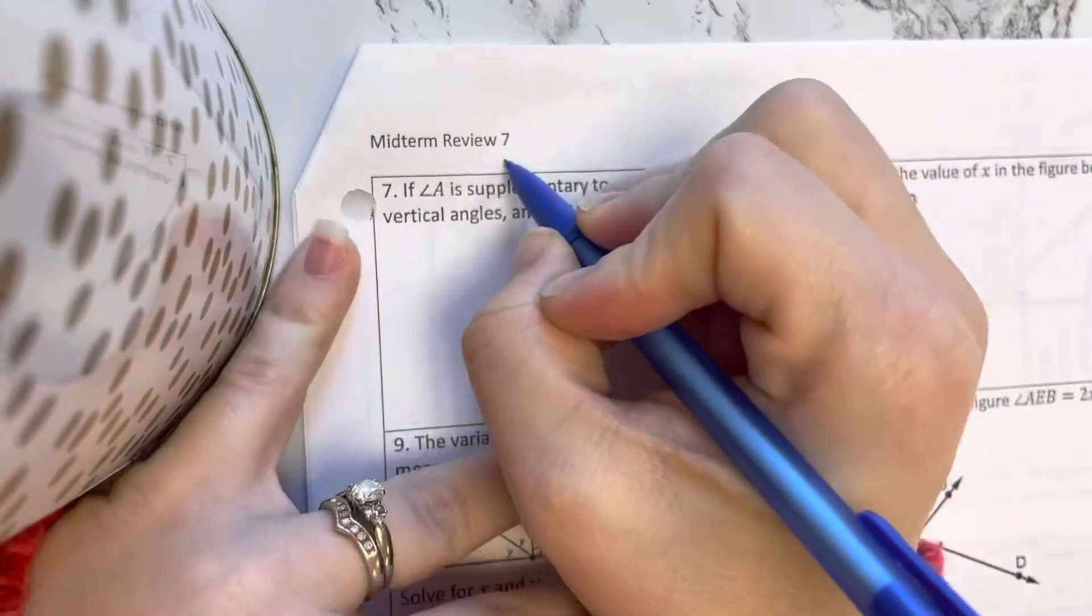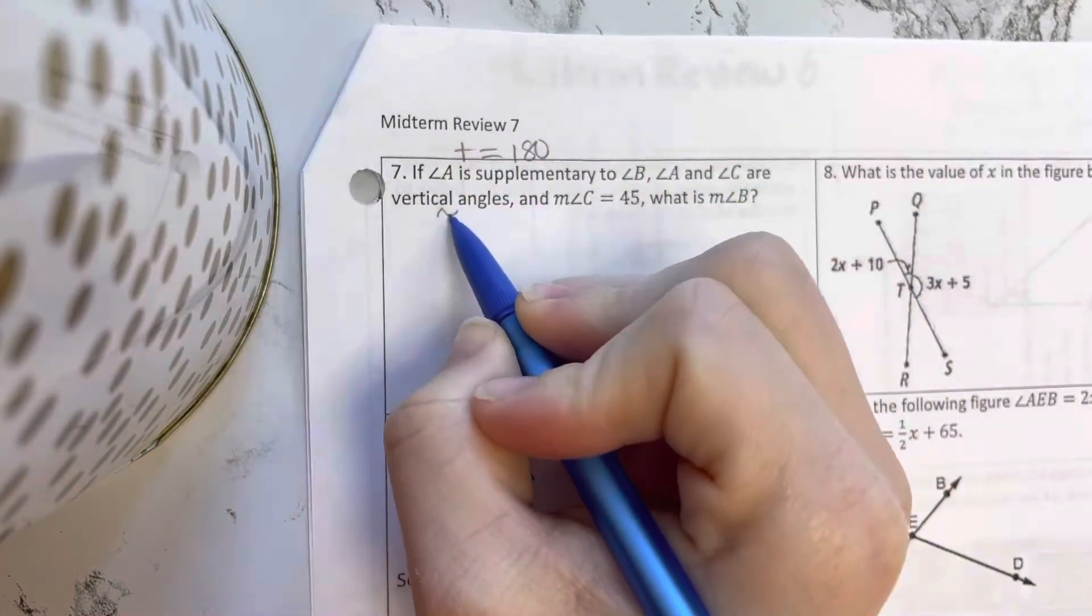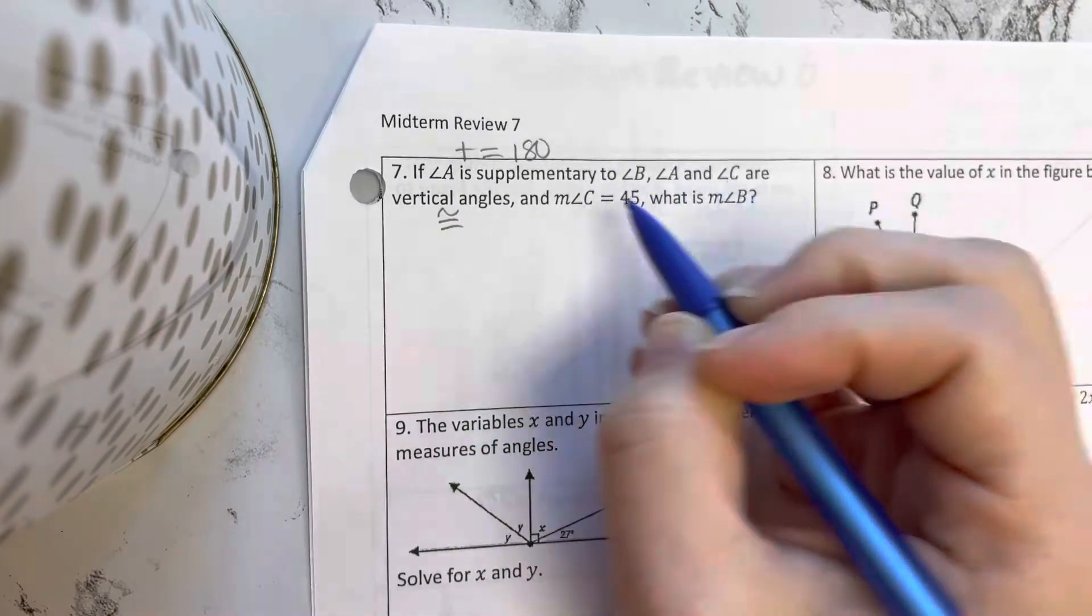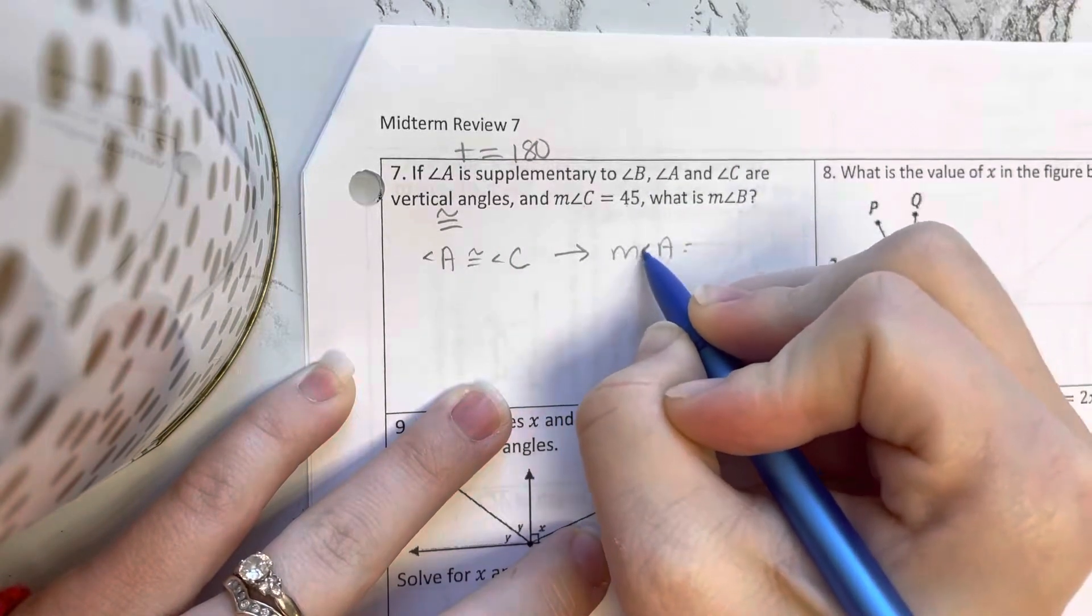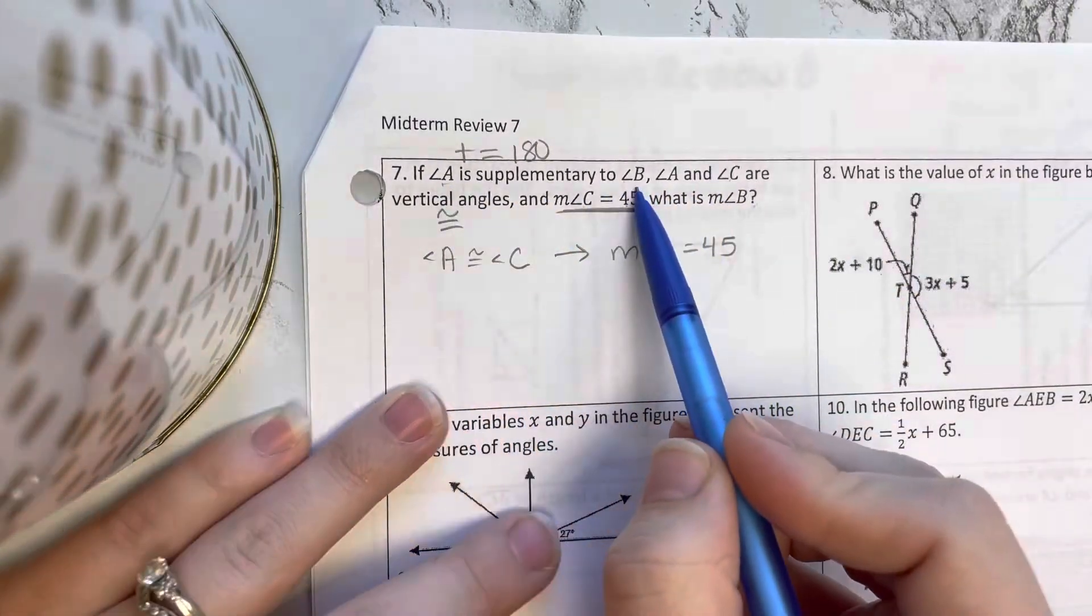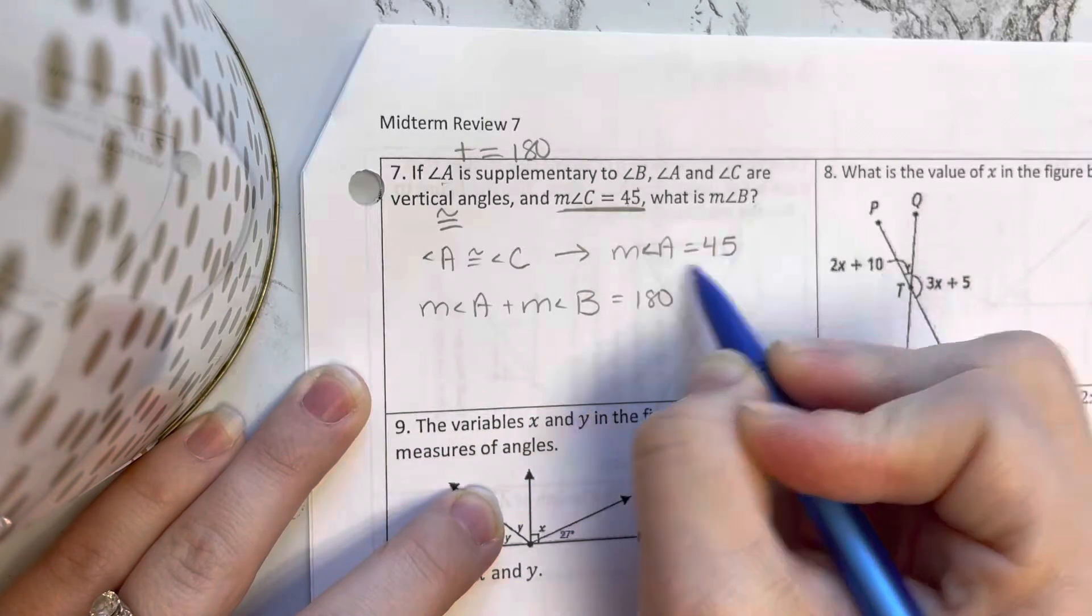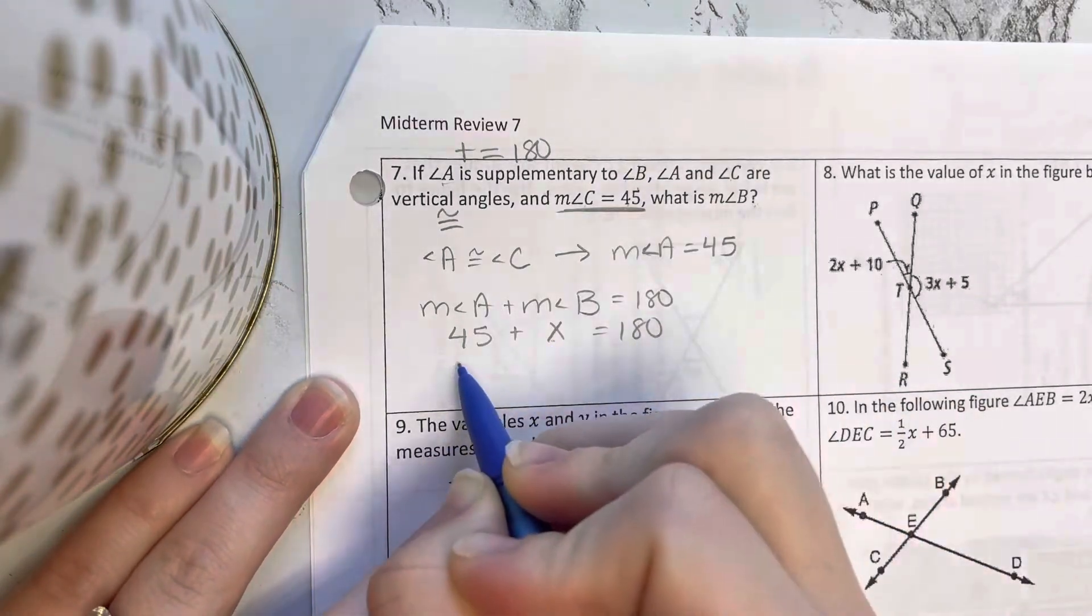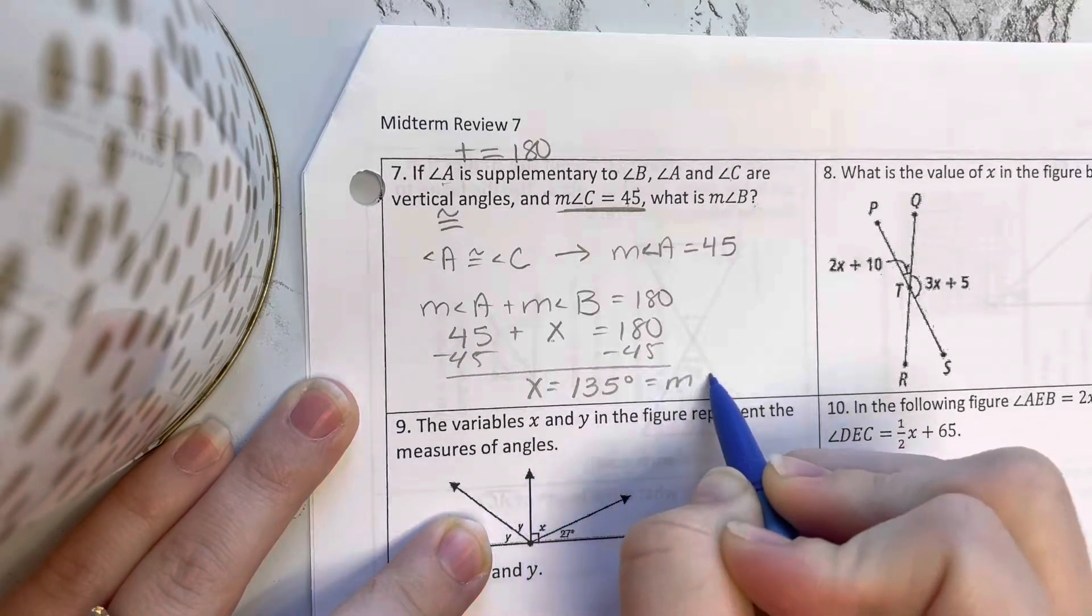So if A is supplementary to B, supplementary means they add to equal 180, and A and C are vertical angles. Vertical angles are congruent, and the measure of angle C is 45. What is the measure of angle B? Well, if C is 45 and A and C are congruent, that tells me the measure of angle A must also equal 45. And then if A and B are supplementary, the measure of angle A plus the measure of angle B should equal 180. Well, if A is 45, I want to find B, they add to equal 180. If I subtract 45, X is going to equal 135 degrees for the measure of angle B.